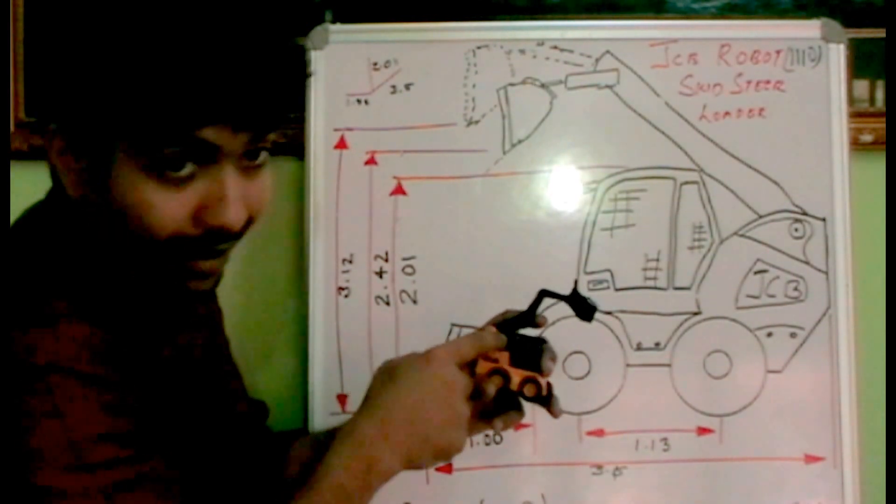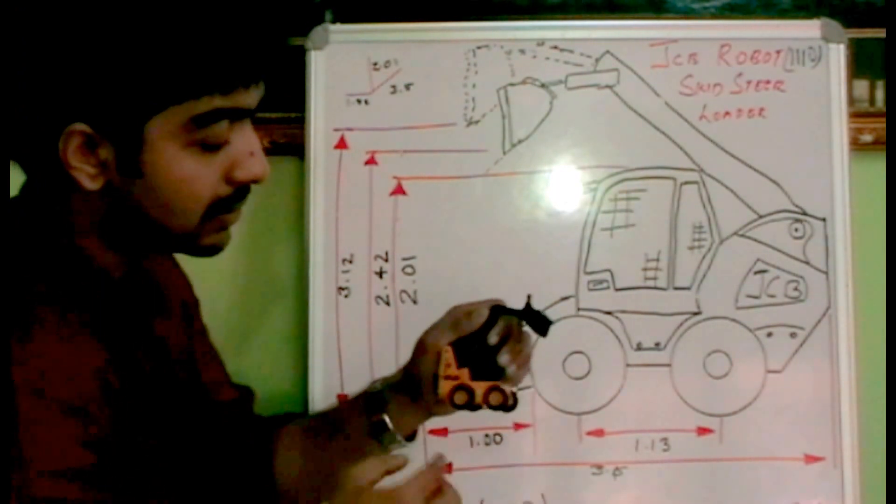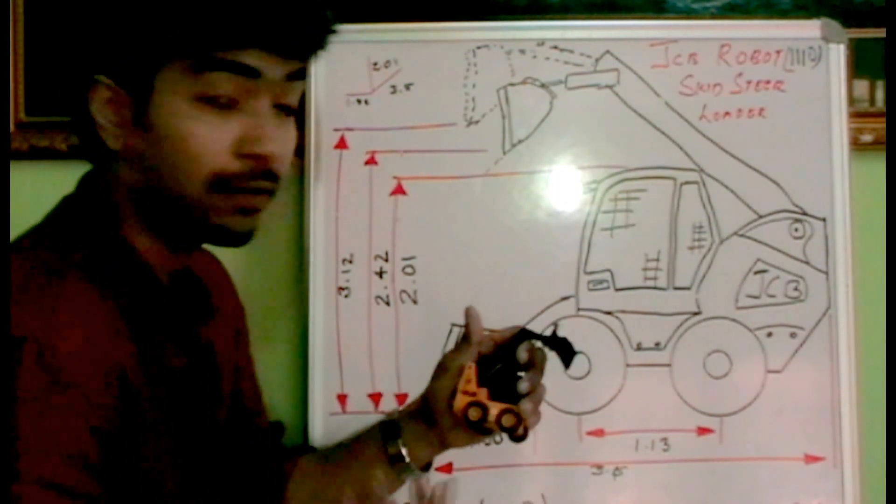It is hydraulically operated. This is a wheeled robot and it has wheels on it. There are track type robots also available.